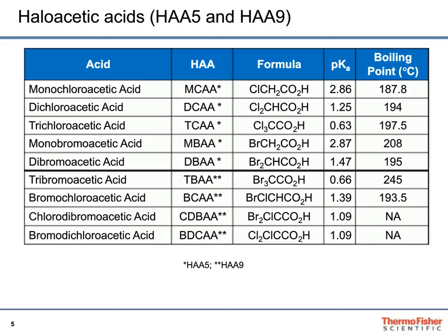For haloacetic acids, they're regulated by two groups: the haloacetic acid 5 (HAA5) and the haloacetic acid 9 (HAA9). Specifically, the HAA5 includes monochloro, dichloro, and trichloroacetic acid (MCAA, DCAA, TCAA), plus monobromo and dibromo acetic acids (MBAA, DBAA). The PKAs are relatively low — all below 3, most below 2. The four additional compounds making up HAA9 include tribromoacetic acid, bromochloroacetic acid, chlorodibromoacetic acid, and bromodichloroacetic acid.